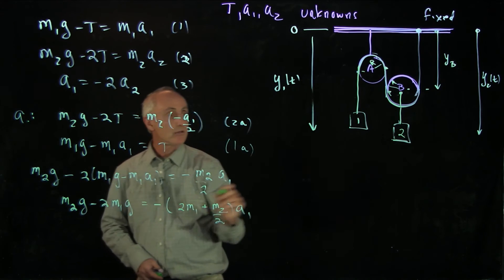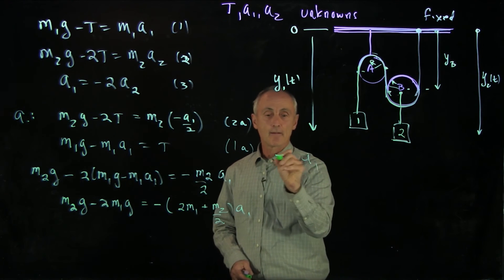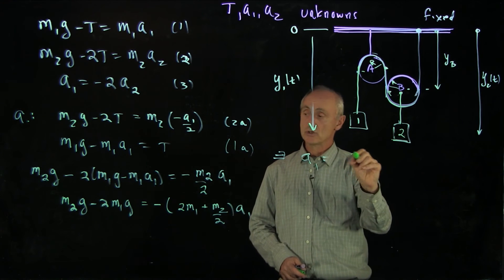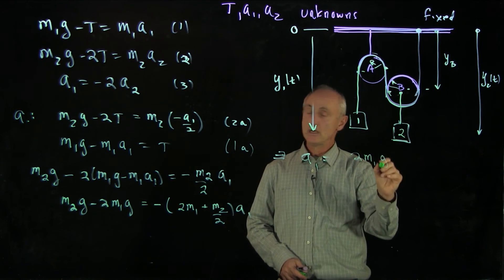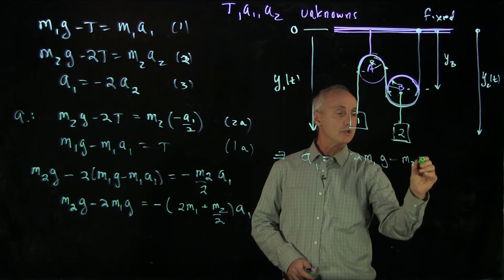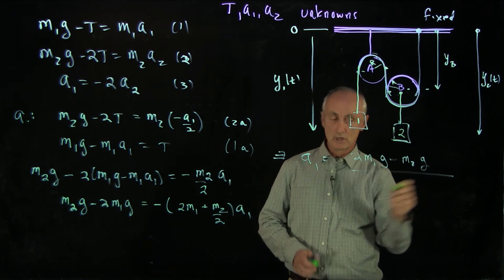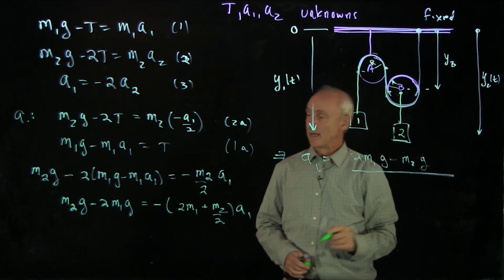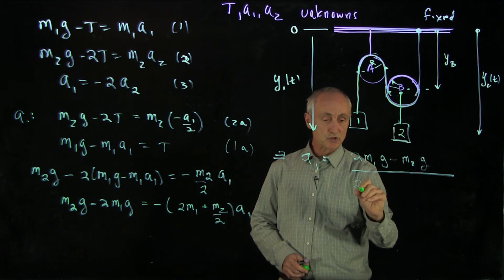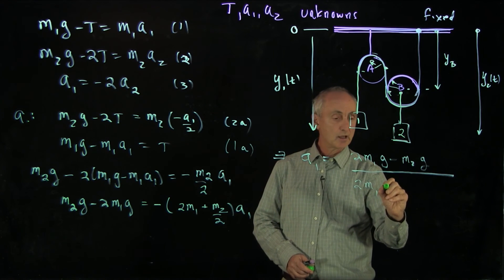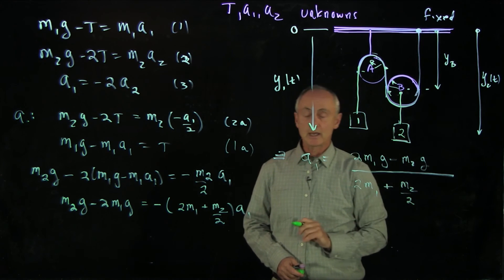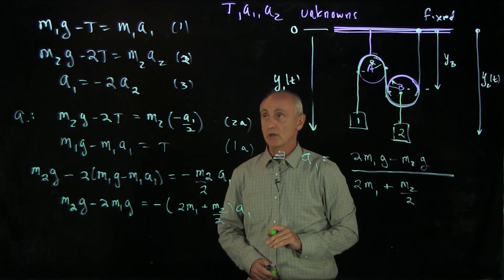And now I can solve for a1. And what I get is I get 2m1g minus m2g. And I want to divide through by this denominator. And what I have downstairs is 2m1 plus m2 divided by 2. And that's my expression for a1.